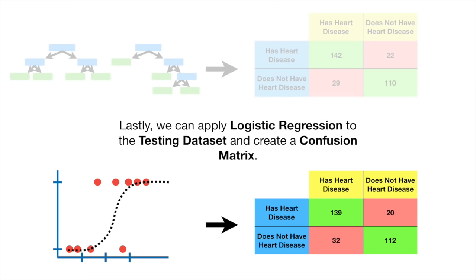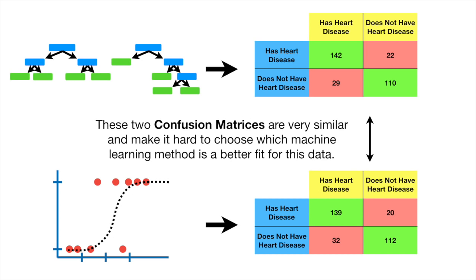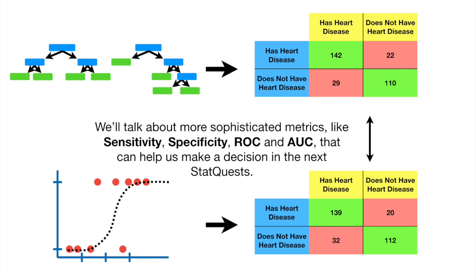Bam! Lastly, we can apply logistic regression to the testing data set and create a confusion matrix. These two confusion matrices are very similar and make it hard to choose which machine learning method is a better fit for this data. We'll talk about more sophisticated metrics like sensitivity, specificity, ROC, and AOC that can help us make a decision in the next StatQuests.